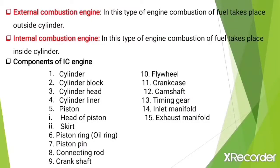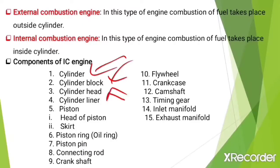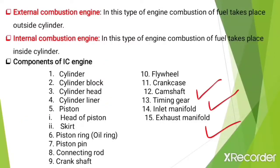Now let's see the components of an IC engine. The first component is the cylinder, which is the heart of the engine. Then cylinder block, cylinder head, cylinder liner, piston — which has two parts: the head and the skirt. After that, piston rings which include oil rings and compression rings, then piston pin, connecting rod, crankshaft, flywheel, crankcase, camshaft, timing gear, inlet manifold, and exhaust manifold.